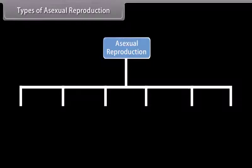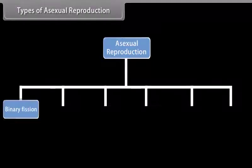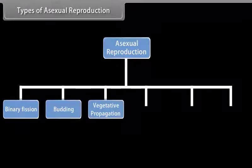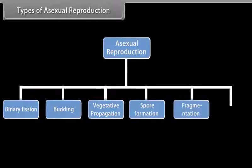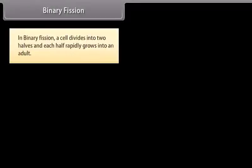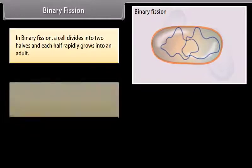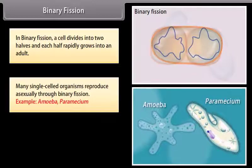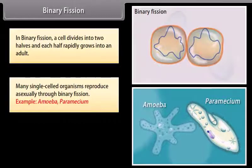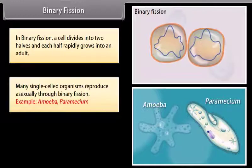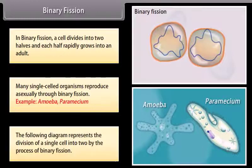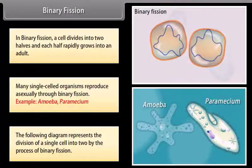Do you know how organisms reproduce asexually? An organism may reproduce asexually by binary fission. In binary fission, a cell divides into two halves and each half rapidly grows into an adult. Many single-celled organisms reproduce asexually through binary fission. Examples include Amoeba and Paramecium. The following diagram represents the division of a single cell into two by the process of binary fission.